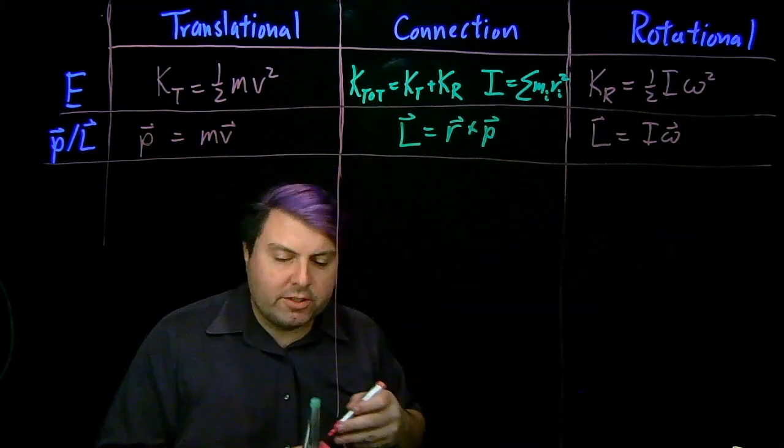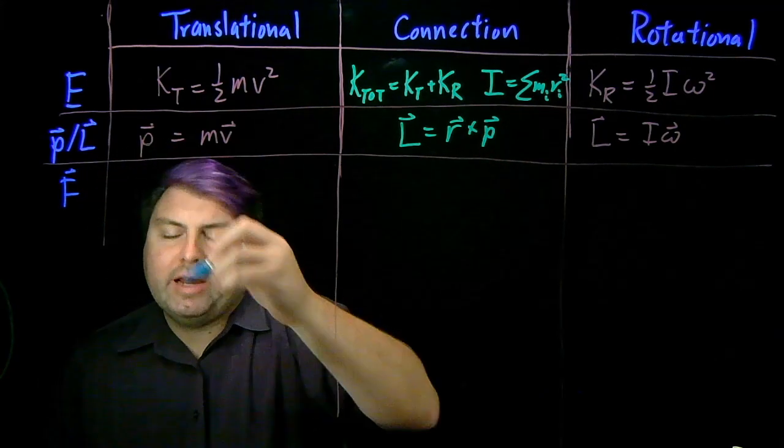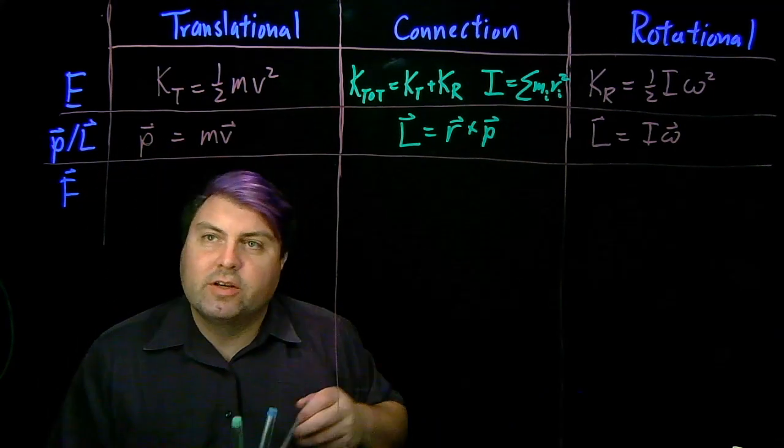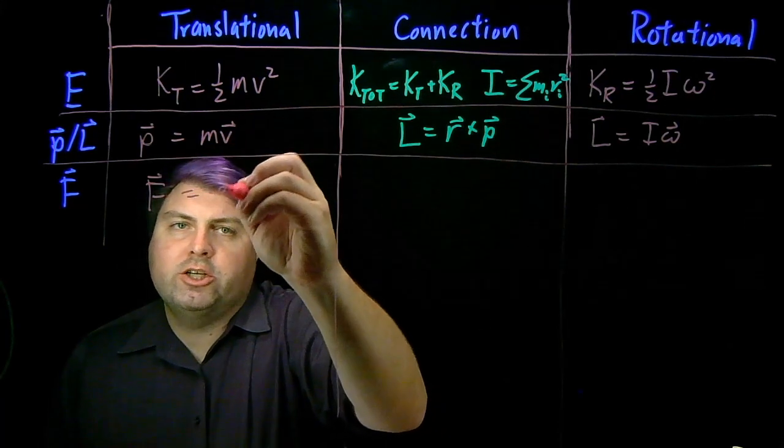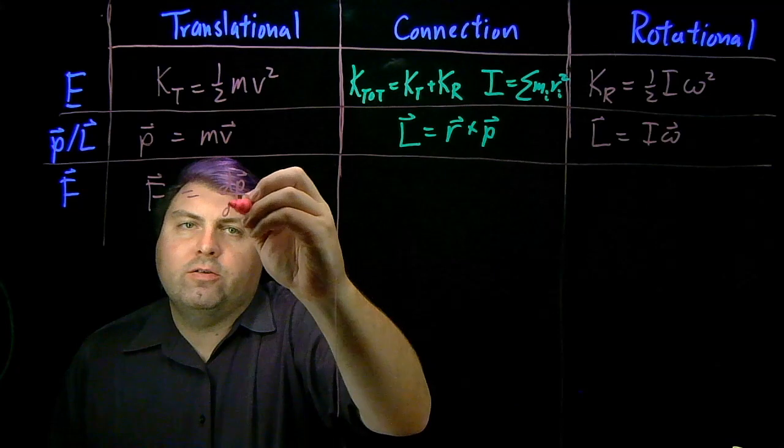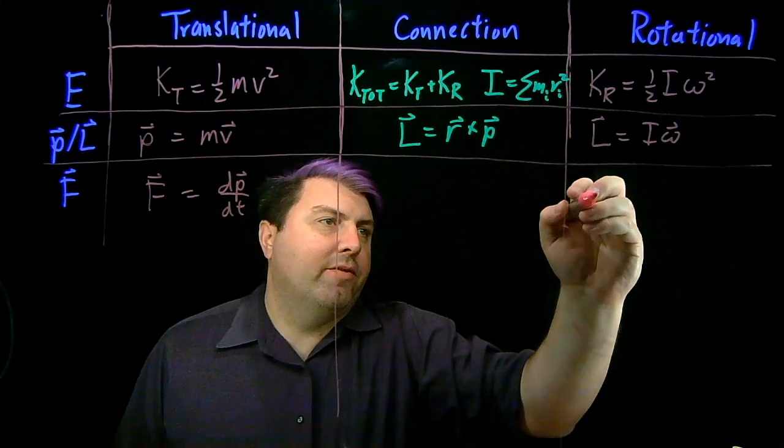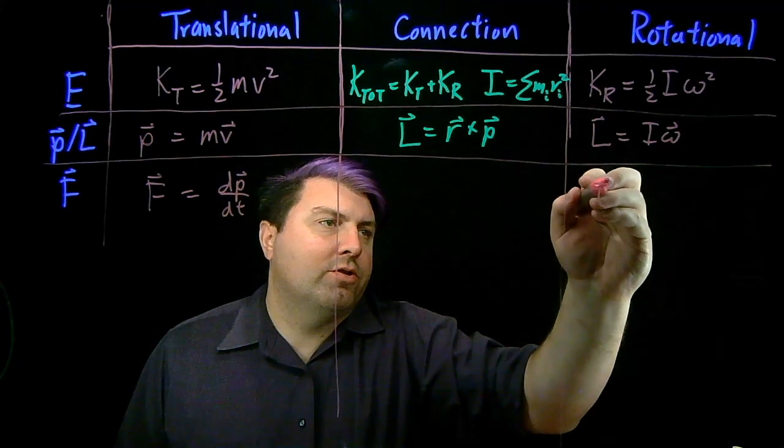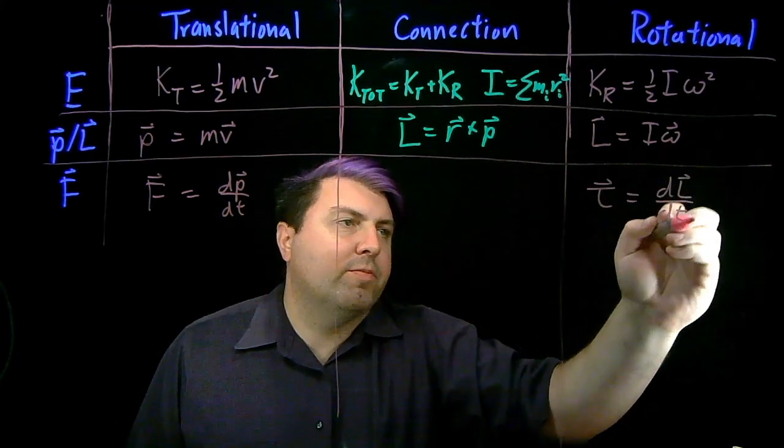If we're talking about force concepts, we have for our forces that we can relate our force to the change in momentum over time. That force is dp dt. And we have for rotational, the rotational equivalent of force torque is equal to the derivative of angular momentum or the rotational momentum dL dt.